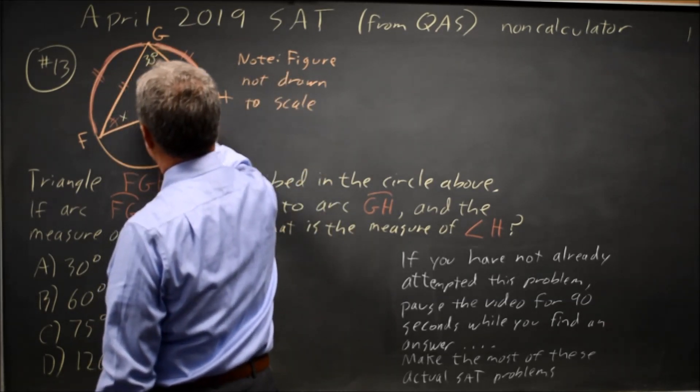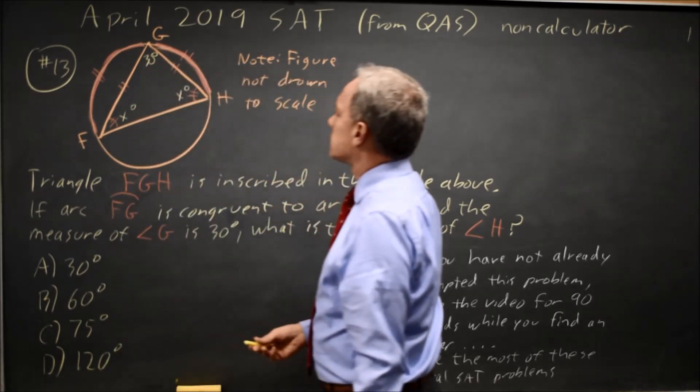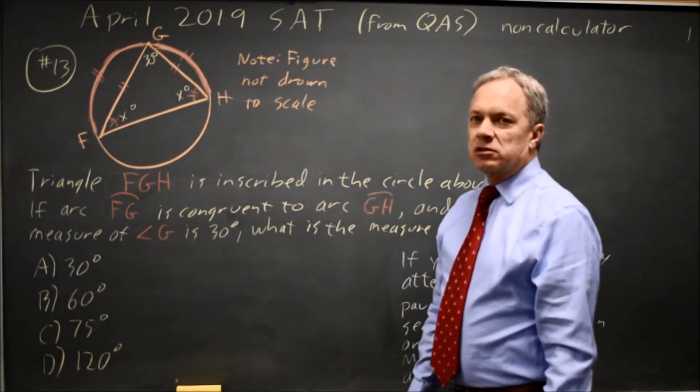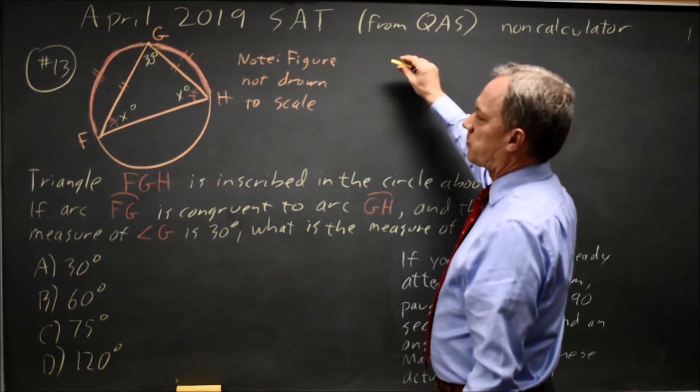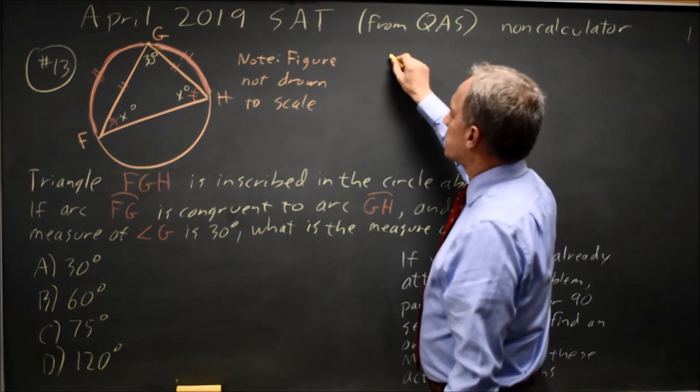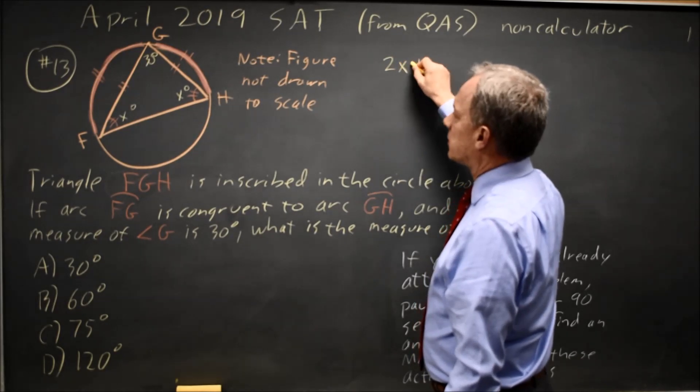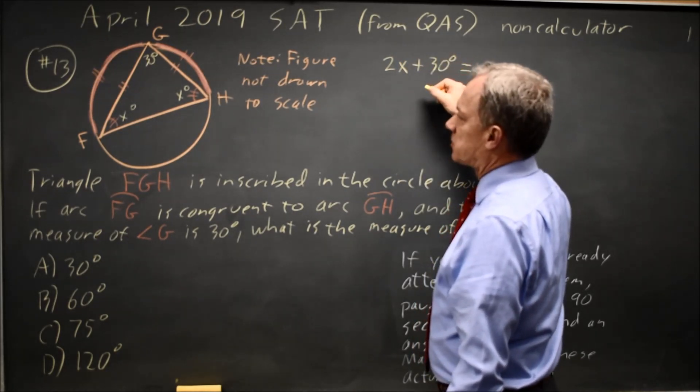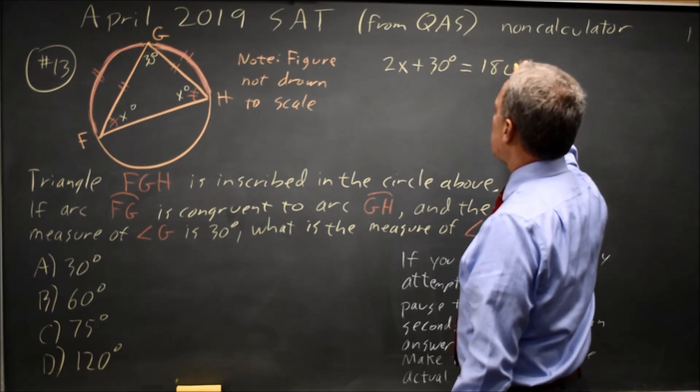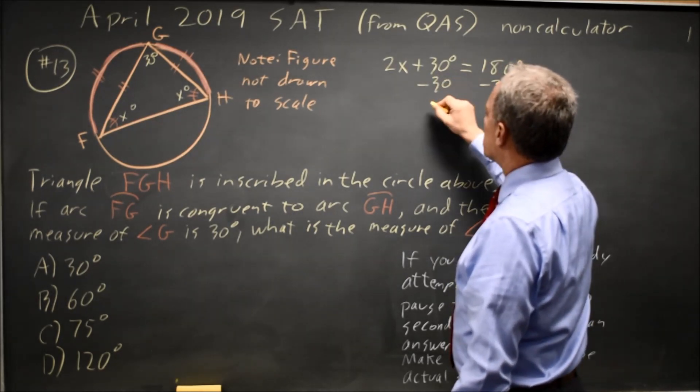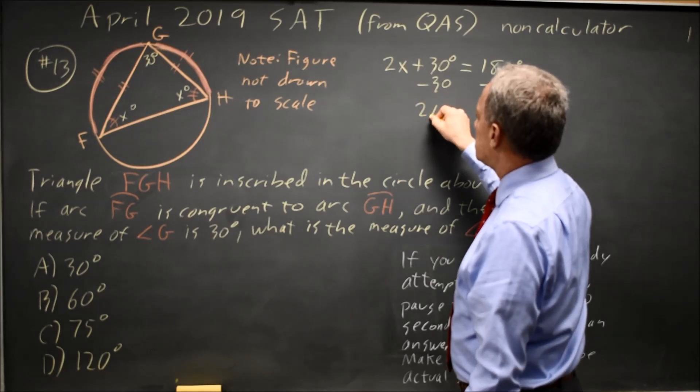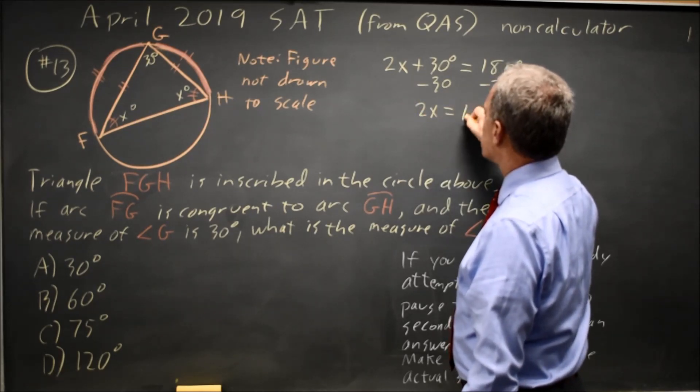So we have 30 degrees here. Let's call these two angles X because they're equal. They're both X. And now what we're using is the fact that the angles of the triangle add up to 180. So X plus X is 2X plus the 30-degree angle. There's all three angles in this triangle, and that adds up to 180. Subtract 30 from both sides. And I'm going to ignore the degree symbol from now on. So 2X equals 180 minus 30 is 150.